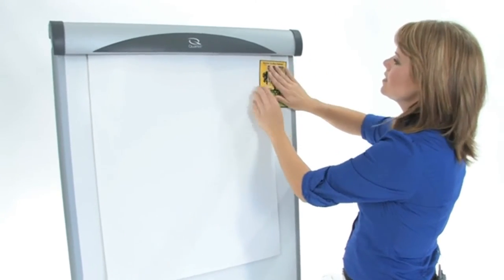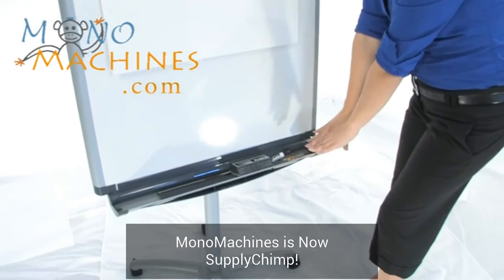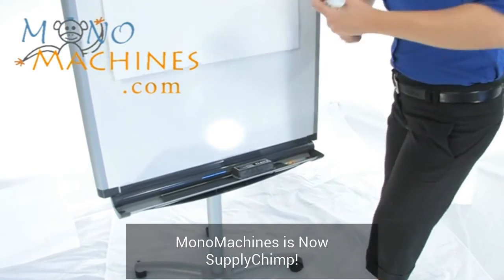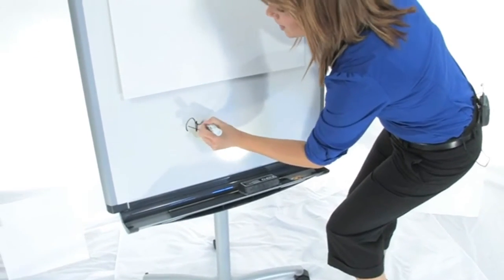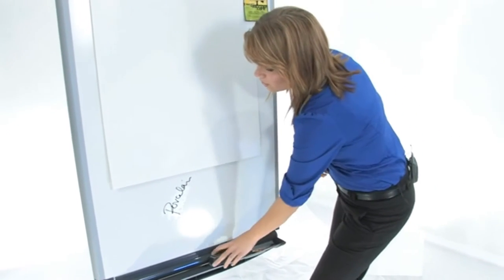Now if you look down here you can see our convenient supply tray, and the surface is made of high quality porcelain, so that means you don't have to worry about any ghosting or staining. Once you erase it, it's gone.